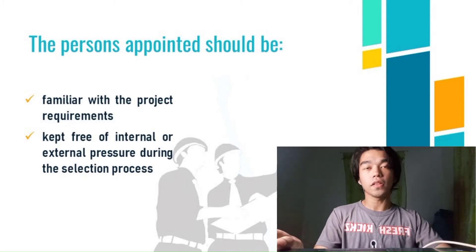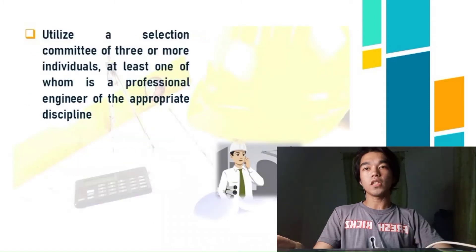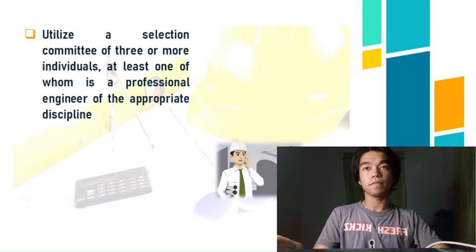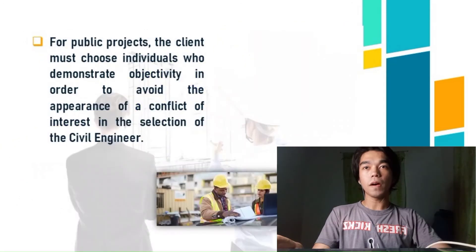Being free of internal and external pressures ensures that the members of the committee will be able to make logical decisions and accurately determine what type of civil engineer the project needs. One recommended procedure is to utilize a selection committee of three or more individuals, at least one of whom is a professional engineer of the appropriate discipline, since they know the technical terms associated with the project.